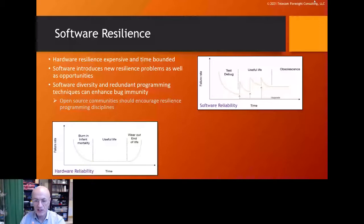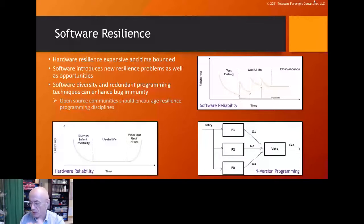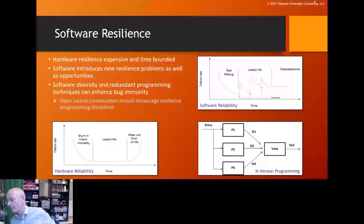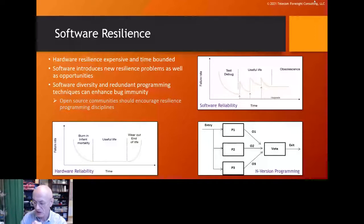One mitigation is N-version programming — having multiple nominally identical software functions so that if one is faulty or has been hacked, the others still control the system. The analogy is aviation: you don't want your aircraft to go down because of a bug in the flight control system. Various techniques can be introduced to improve this.